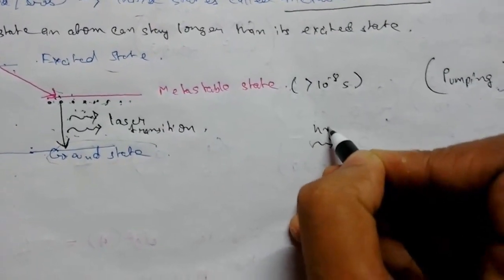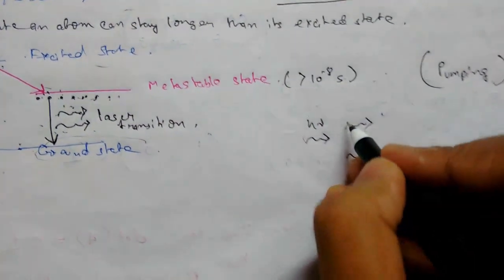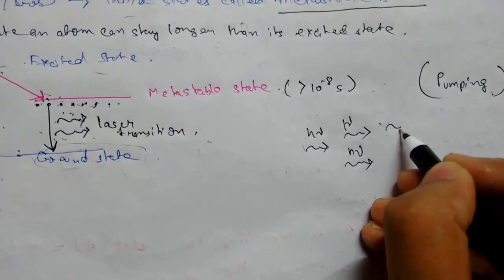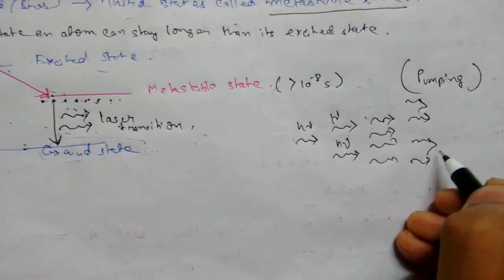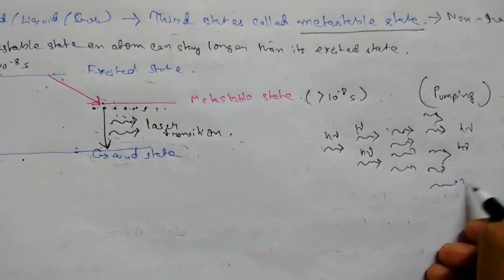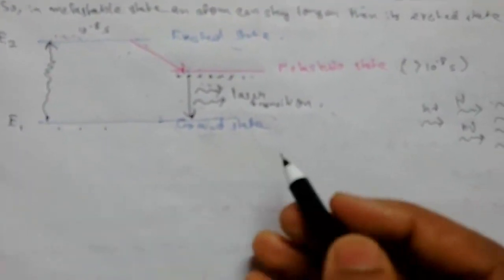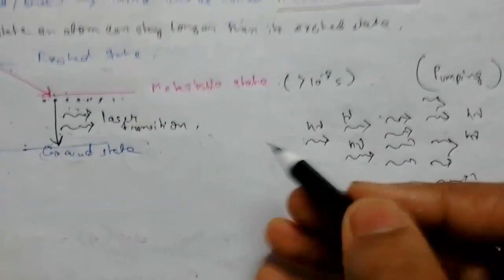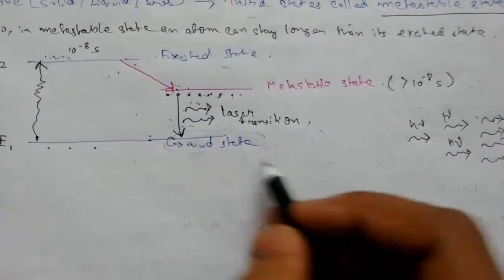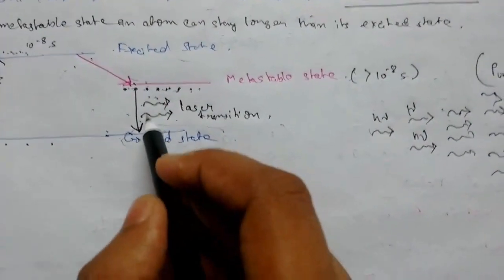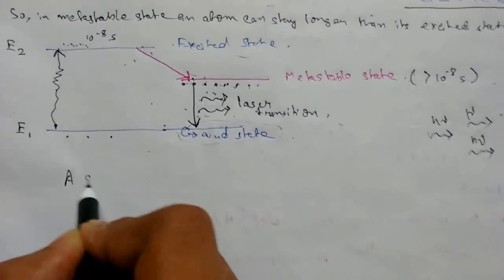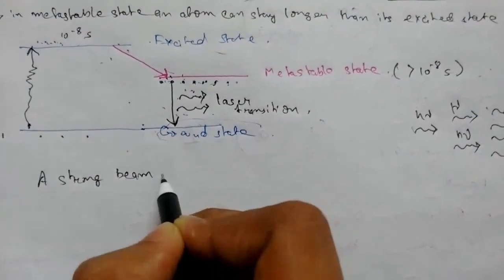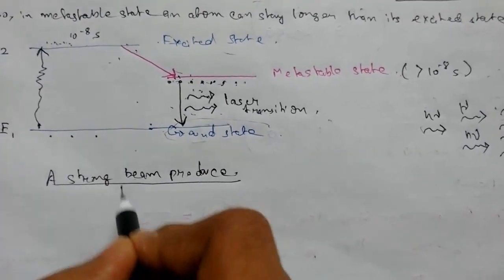A photon comes in, strikes the metastable state atoms, and generates more photons. Since this is a continuous process, multiples of photons get emitted — all of energy h-nu. Amplification takes place: a large number of photons are emitted and light is amplified. These photons have the same frequency, travel in the same direction, and have the same phase because the light is coherent. Hence a strong coherent beam is produced — this is our laser.